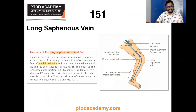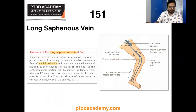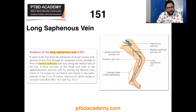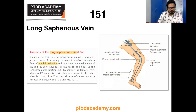First, we'll look into long saphenous vein anatomy. The long saphenous vein starts in the foot from tributaries of the dorsal venous arch, permits reverse flow through its competent valves, ascends in front of the medial malleolus, and runs along the medial side of the leg. It then ascends in the thigh and ends at the saphenofemoral junction by joining the femoral vein, almost one and a half inches or four centimeters below and lateral to the pubic tubercle. It has around 15 to 20 valves, and dysfunction of these valves results in varicose veins.